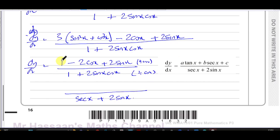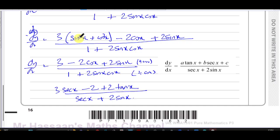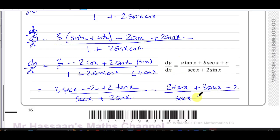In the numerator: dividing 3 by cosine x gives 3 secant x. Dividing minus 2 cosine x by cosine x gives minus 2 — the cosine x cancels. And 2 sine x divided by cosine x is plus 2 tan x. So we can rewrite the expression as 2 tan x plus 3 secant x minus 2, over secant x plus 2 sine x. That's exactly what they wanted us to show.